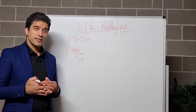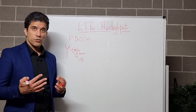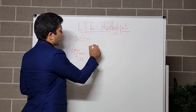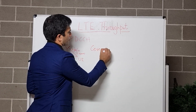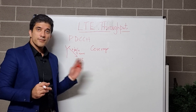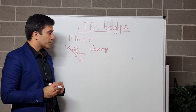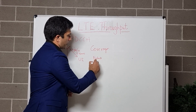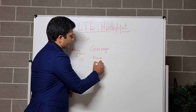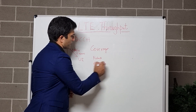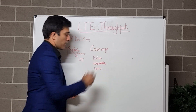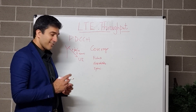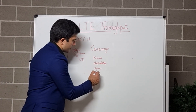Now that we have introduced the concept of PDCCH, we look at how throughput is impacted. In the coverage scenario, we want to make the PDCCH robust, decodable, and in sync. How this is actually implemented in your 3GPP specifications is through your CCEs — Control Channel Elements — which can be 1, 2, 4, or 8.